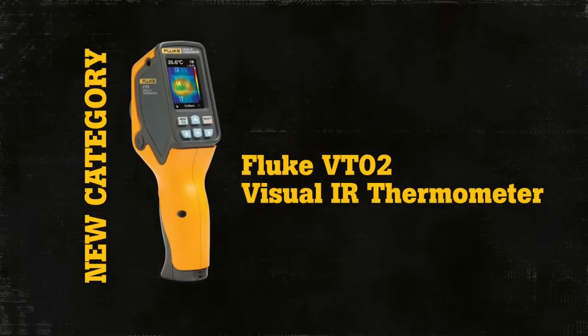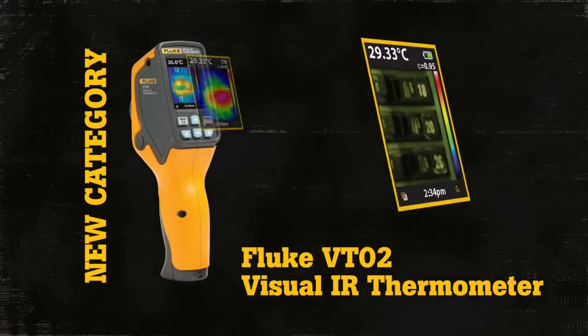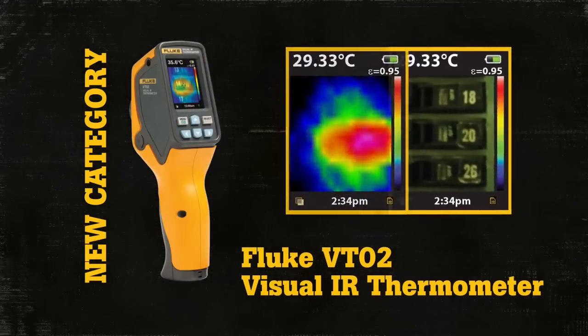By taking thousands of measurements per second, the Visual IR Thermometer works by taking a visual image and applying a thermal heat map.